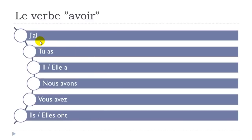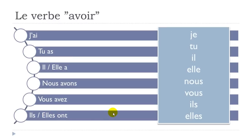Let's see the whole conjugation one more time: j'ai, tu as, il a, elle a, nous avons, vous avez, ils ont, elles ont.